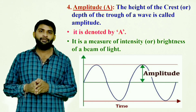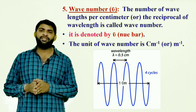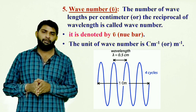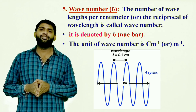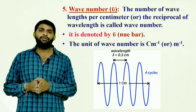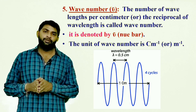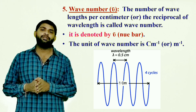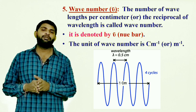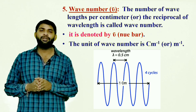Fifth property — wave number: the number of wavelengths per centimeter, or the reciprocal of the wavelength, is called wave number. It represents the number of waves distributed per one centimeter distance. Wave number is denoted by nu-bar (ν̄). The unit of wave number is centimeter inverse (cm⁻¹) or meter inverse (m⁻¹).